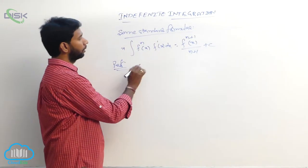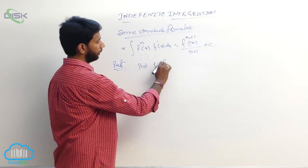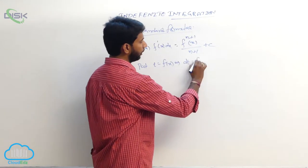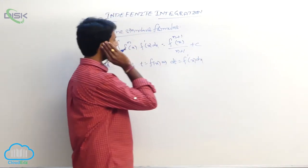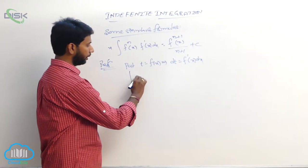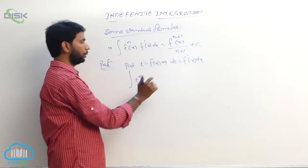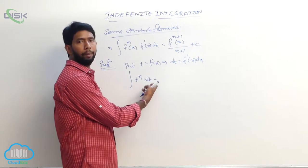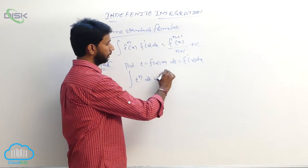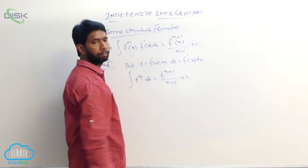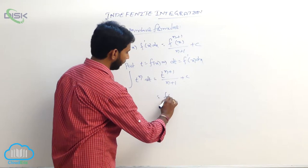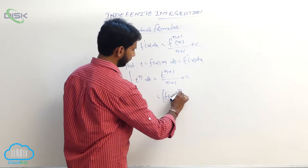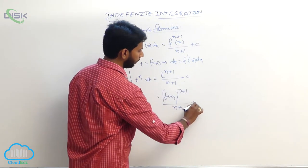Proof: put t equal to f(x), differentiate both sides, then dt equals f'(x) dx. The integral becomes integral of tⁿ dt, which is of the form integral of xⁿ dx. Applying the formula: t^(n+1)/(n+1) plus constant. Substituting back t equals f(x): [f(x)]^(n+1)/(n+1) plus constant.